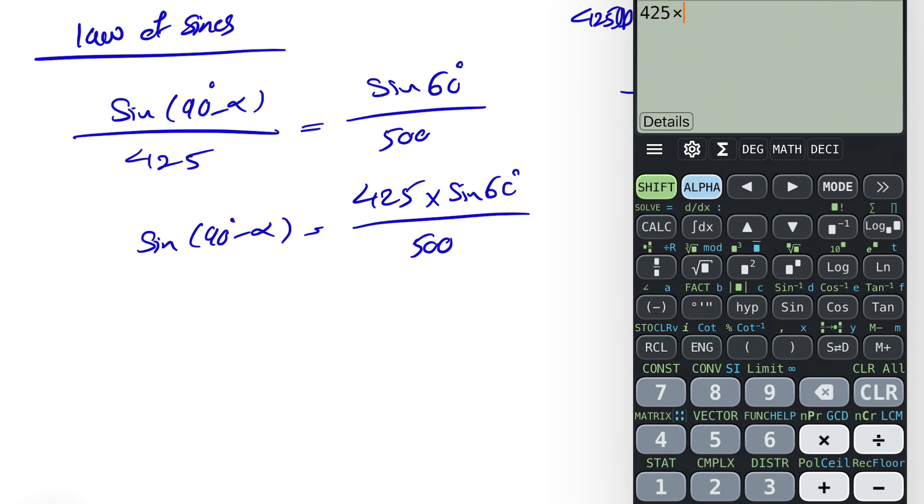So this is going to be 0.736, and basically 90 minus alpha would be sine inverse of this value. So sine inverse of 0.736, which is going to be 47.39.